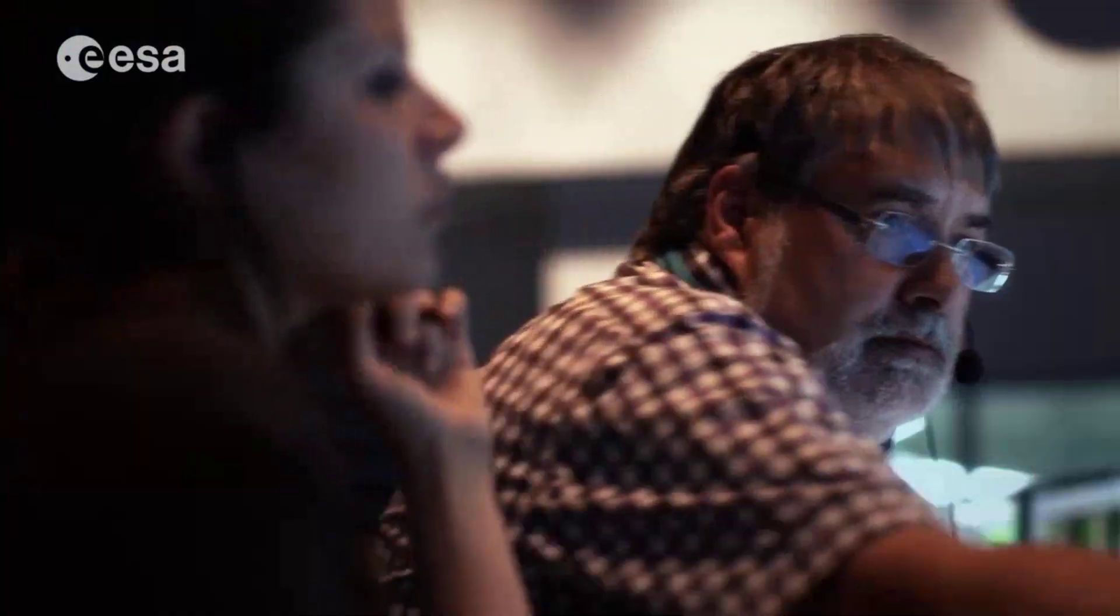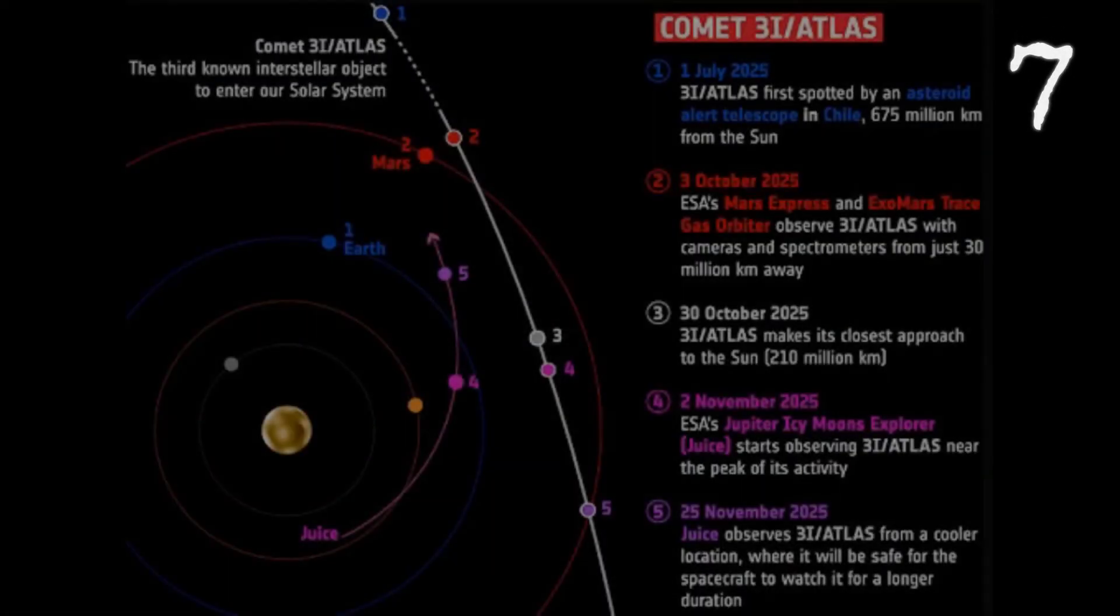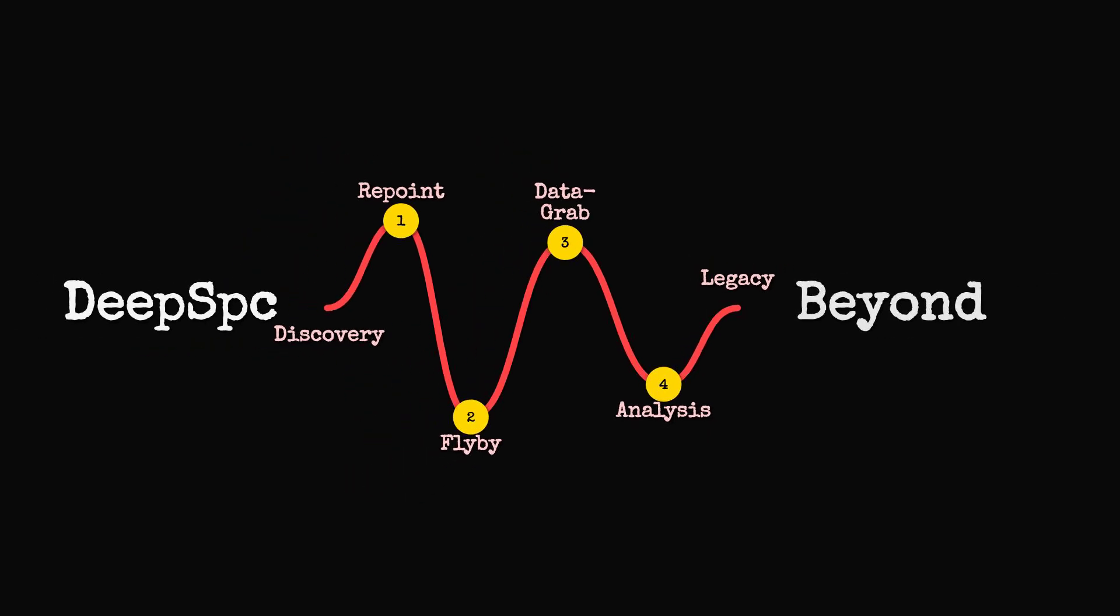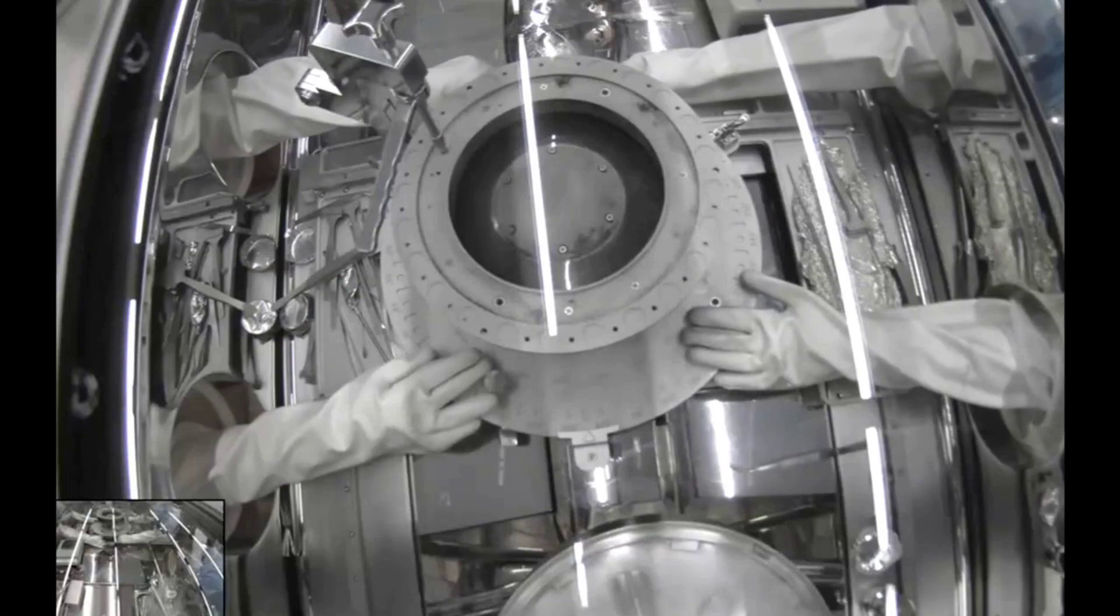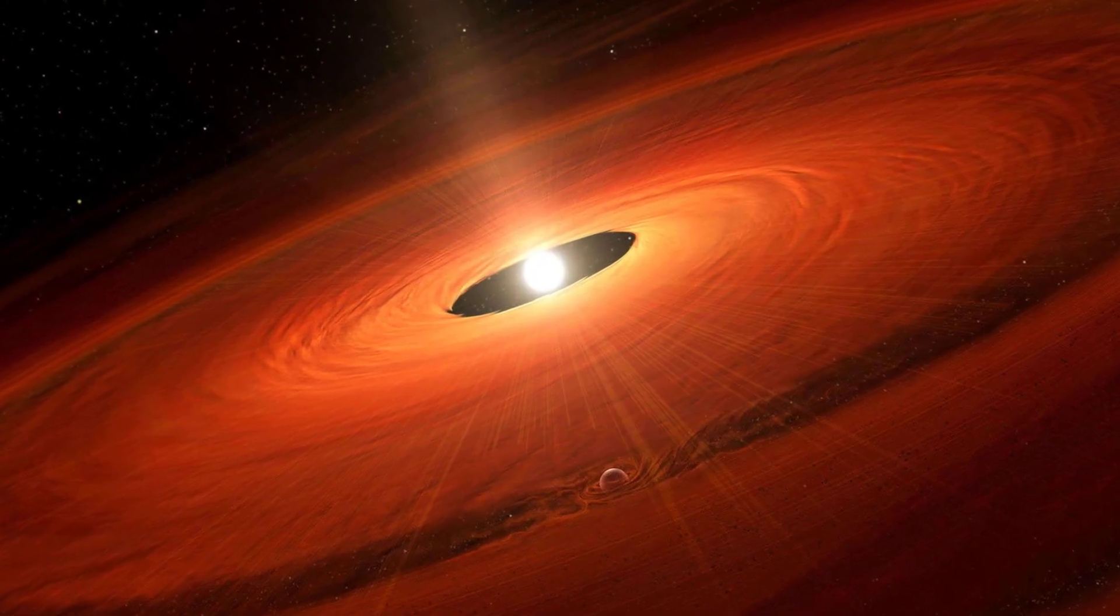As word spread, astronomers scrambled to secure observation time on telescopes across the globe. The window to study such an object is always brief, and the chance to capture its passage near Mars was a rare alignment. The urgency was not just scientific, but historical. To witness an interstellar comet is to glimpse the raw material of worlds beyond our own, unchanged since before the Sun was born.